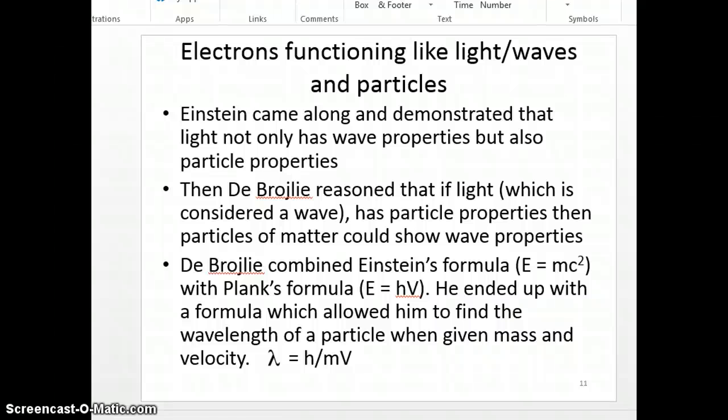So far we have said electrons behave as light, which have waves. So electrons have properties and characteristics of waves, for example, having wavelength, frequency, and speed.